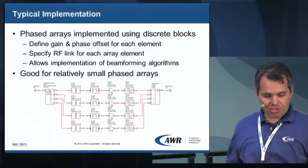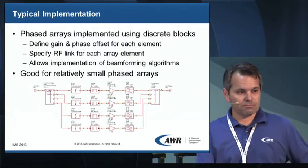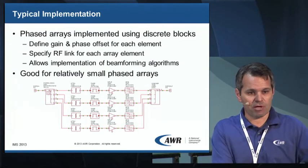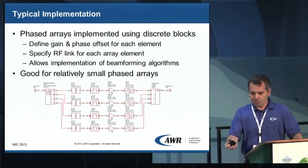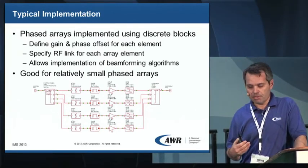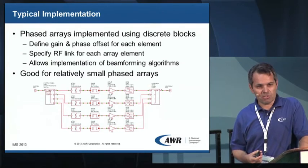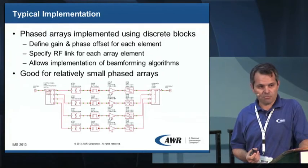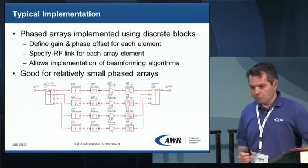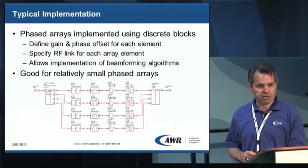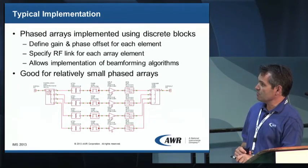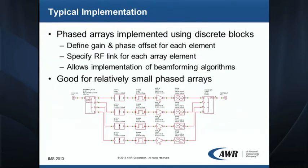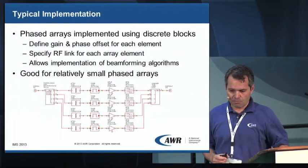As shown at the bottom of the slide, this is a typical implementation we've used in the past — in this case a simple four-element array where each element has its own RF chain. You can imagine how adding a few tens of elements causes the number of components in the system diagram to blow up. What we really want to do is replicate this functionality but rather than build everything with discrete components, include everything in a single block — defining gain and phase offset for each element, specifying the RF link for each element, and providing beamforming algorithm capability.